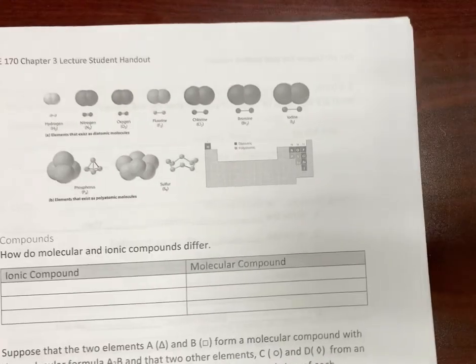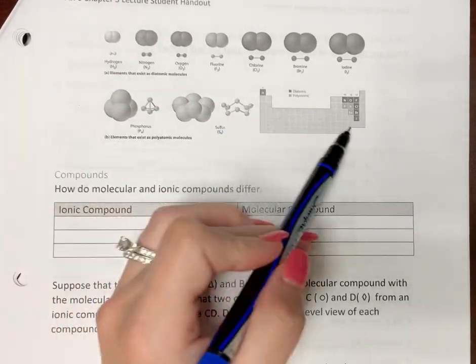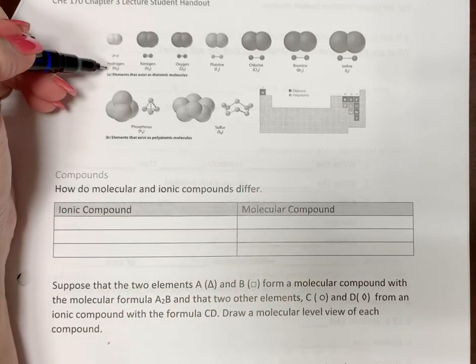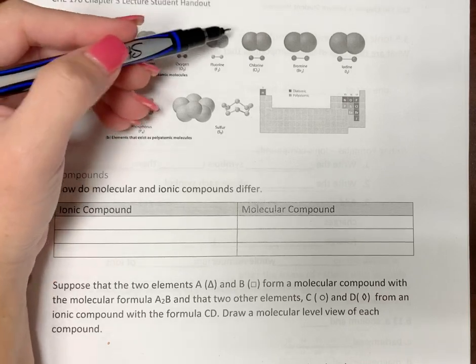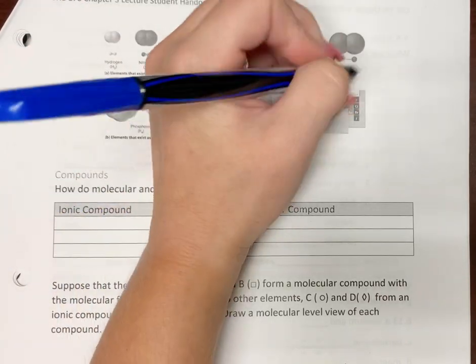So some examples here. Here's on the periodic table. Hydrogen, nitrogen, oxygen, fluorine, chlorine, bromine, and iodine. And so here, these would be your halogens.